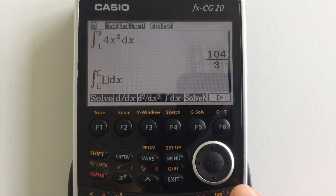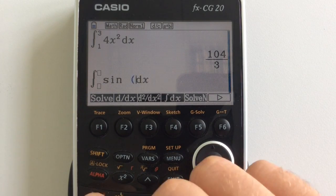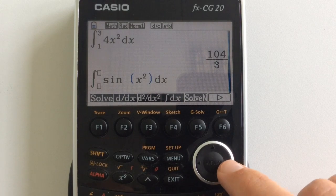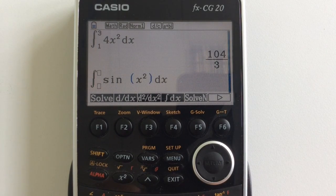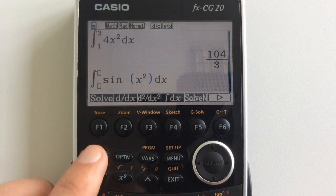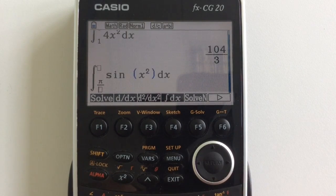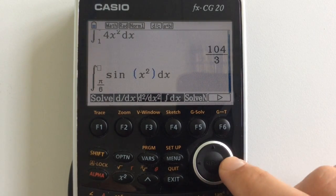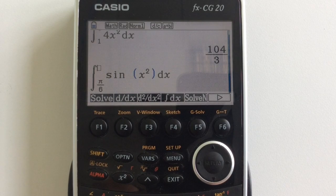And of course we can use this no matter what the expression is. Let's go for something like the sine of x squared between pi by 6 and pi.